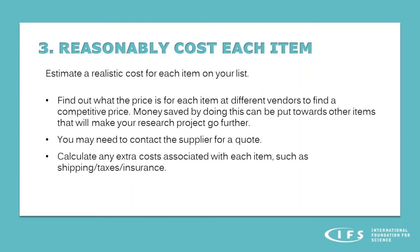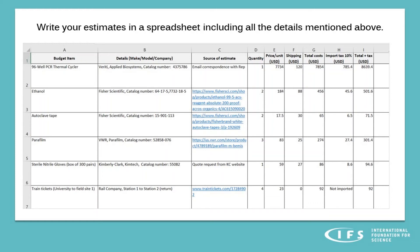You will have to provide an estimated cost for each item that is realistic and reflects the current cost. To do this, find out the price for each item from different vendors to obtain a realistic and competitive price. You may need to contact the supplier for a quote. Calculate any extra costs associated with the item such as shipping, taxes, and insurance. When you have found a suitable price, write your estimate in a spreadsheet including all the details so that you can refer back to it later. It is good to have this information noted down as you may need to clarify to IFS where you found your cost estimates.